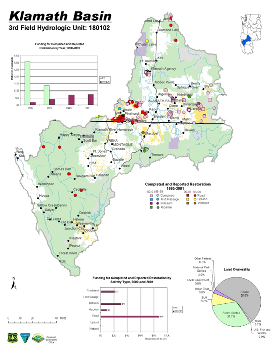The Klamath Basin is the region in the U.S. states of Oregon and California drained by the Klamath River. It contains most of Klamath County and parts of Lake and Jackson counties in Oregon, and parts of Del Norte, Humboldt, Modoc, Siskiyou, and Trinity counties in California. The 15,751 square mile drainage basin is 35% in Oregon and 65% in California.